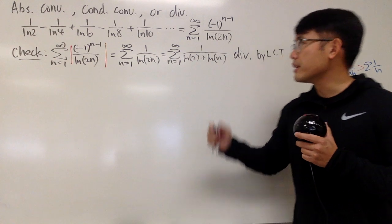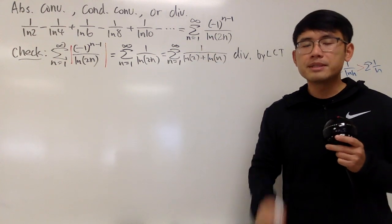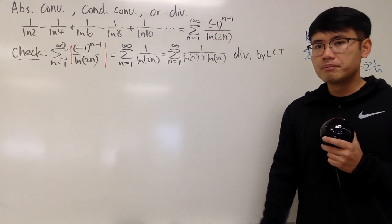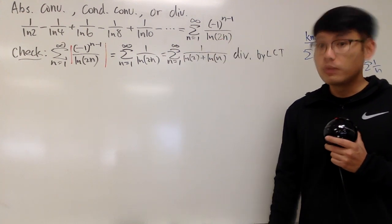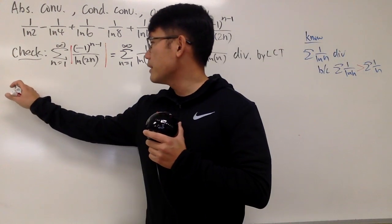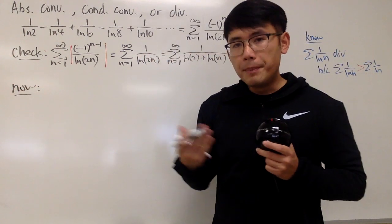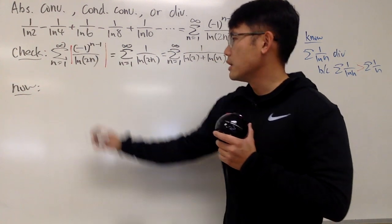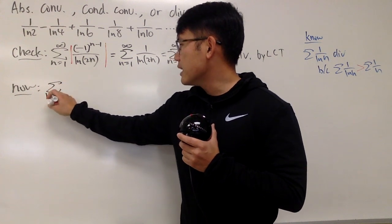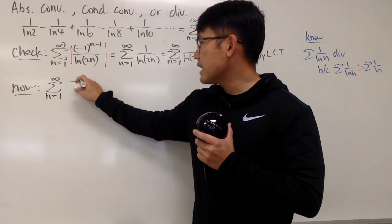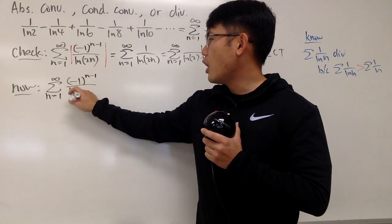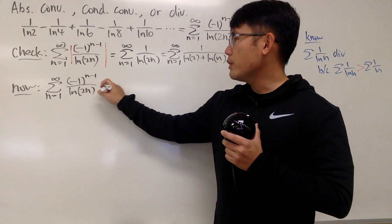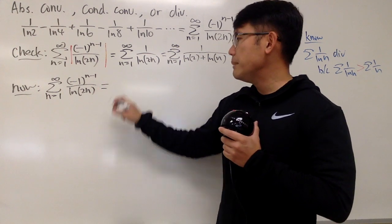So that's the idea for the absolute value version. This tells us the series is not absolutely convergent. But does that mean the original version can't converge? Let's see. Without the absolute value, because we have some negative terms, we actually have a better chance. This is an alternating series.